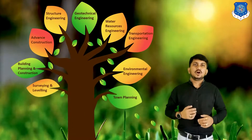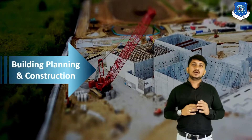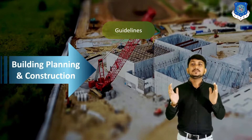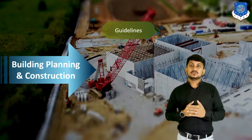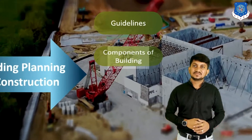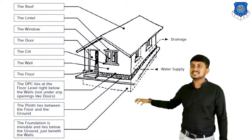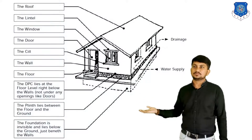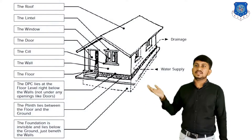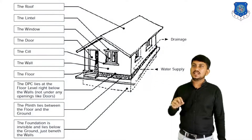Now let's discuss the second branch of Civil Engineering: Building Planning and Construction. Before any construction, we must plan a building properly. Buildings are planned according to fundamental principles of building planning and various building bylaws of local municipal authorities. First we need to understand the main components of a building. As shown on screen, the bottom part of the building is called the foundation, which is invisible and lies below the ground. Above the foundation, there is a layer called the plinth, which is between the floor and the ground. Above the plinth, there is a small layer called the damp-proof course.